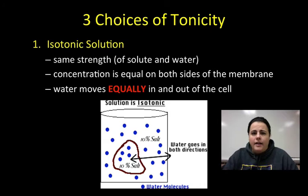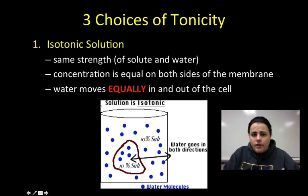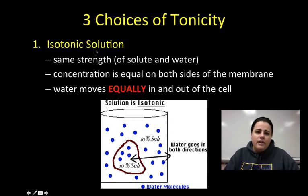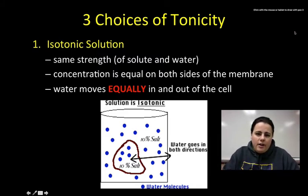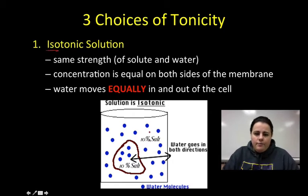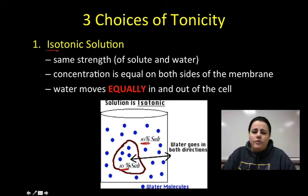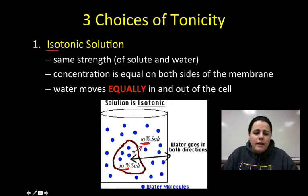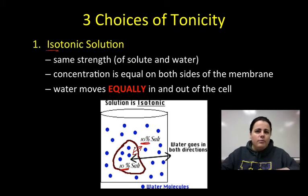Let's look at each of those tonicities in more detail. The first one is an isotonic solution, meaning the solution surrounding the cell is isotonic — iso meaning the same strength. If we look at the picture, the outside solution is at 10% salt and the inside of the cell is also at 10%. When this situation occurs, water will move in and out of the cell at equal rates. Molecules never stop moving, including water molecules, so they will always move in and out at equal rates.